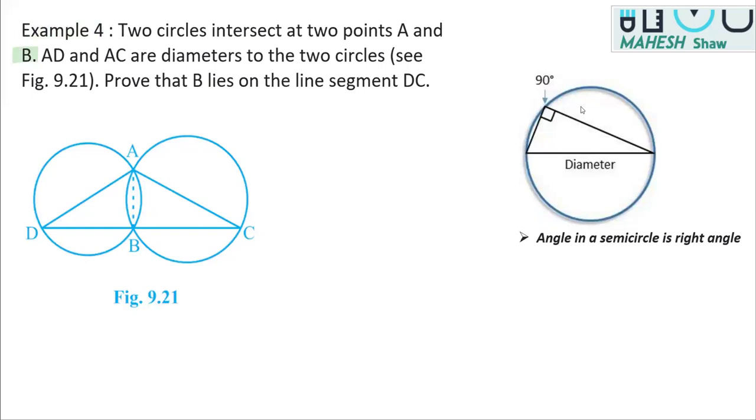Where AC and BD are the diameters—sorry, not AC, that's AD and AC, right? These are the diameters of this circle, as you can see in the figure. What we have to prove is that this point B lies on DC.